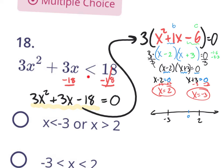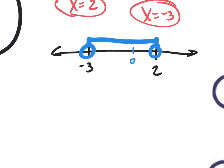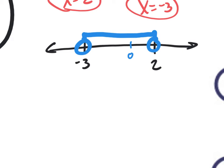Because this inequality does not have 'or equal to' — it's a strict less than — you cannot include the values negative 3 or 2. So you use open dots. The answer is the area between negative 3 and 2. Because we tested 0 and it worked, that means the answers are together as a compound inequality: negative 3 less than x less than 2.